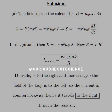Now we find the direction of the current. Since B on the inside of the solenoid is to the right, by the right-hand rule, and increasing, Lenz's Law tells us the field of the loop outside has to point to the left. If the field is pointing to the left, we know via the right-hand rule — working backwards — that the current is going counterclockwise. Point your thumb to the left, curl your fingers, and you get a counterclockwise rotation. So the current is actually running from left to right through the resistor.